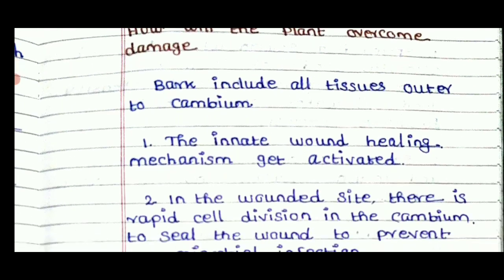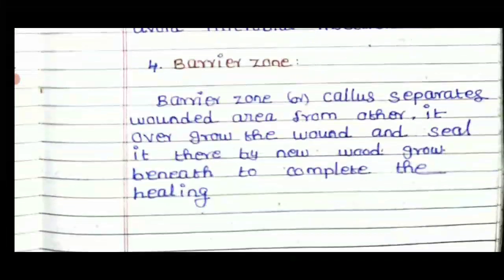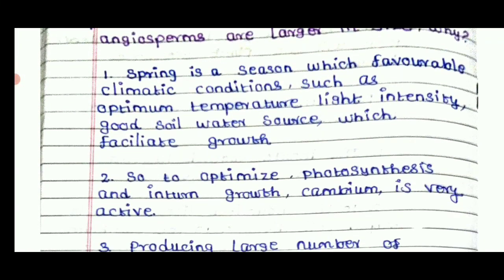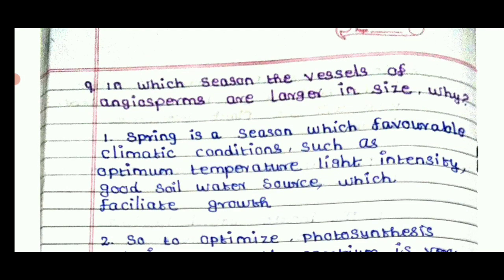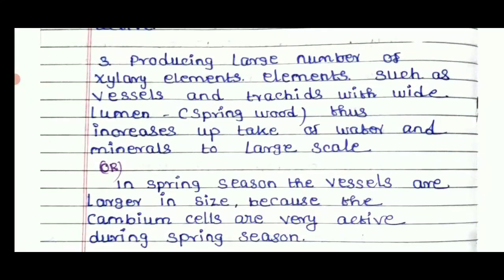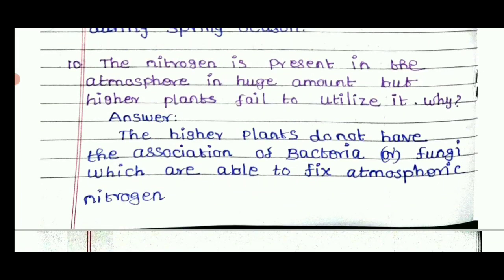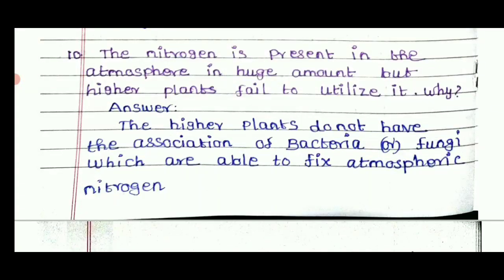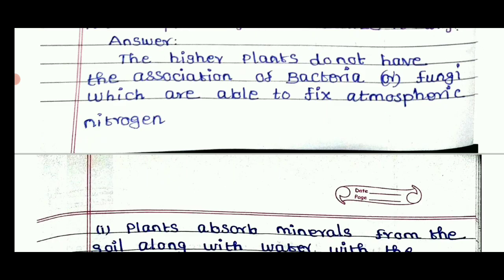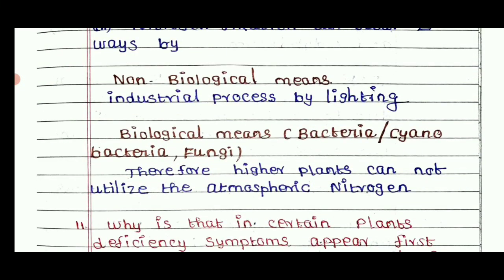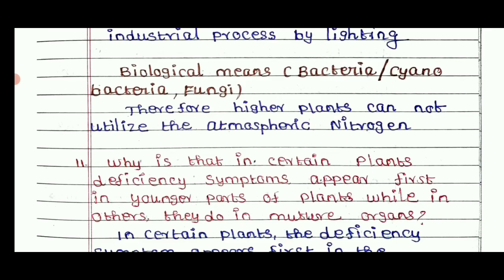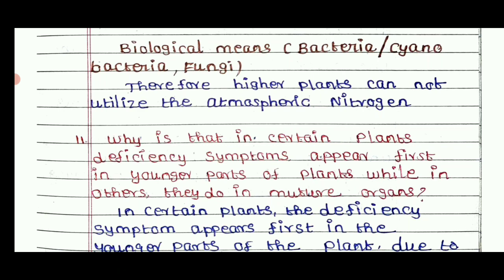How do plants overcome bark damage? In the spring season, vessels of angiosperms are large in size because the cambium cells are very active during the spring season. Nitrogen is present in the atmosphere in high amounts, but higher plants cannot utilize it because higher plants do not have their own association with bacteria and fungi that are able to fix atmospheric nitrogen.